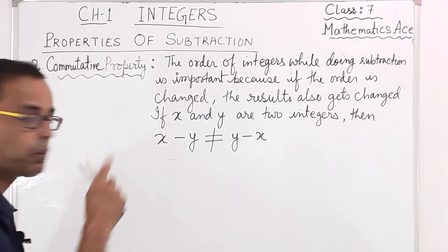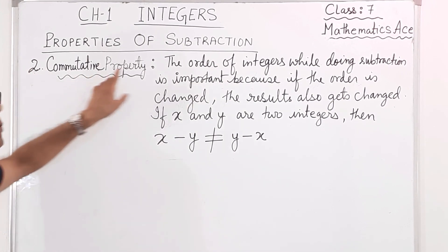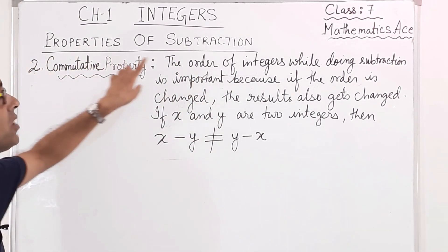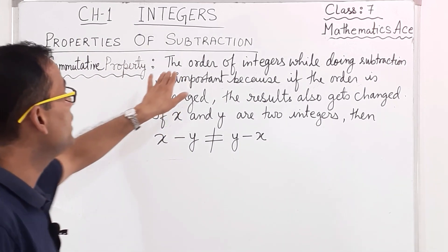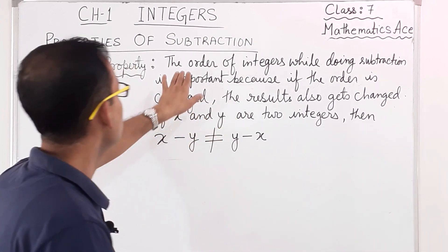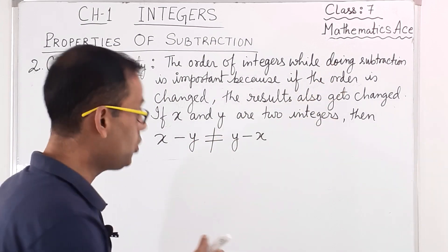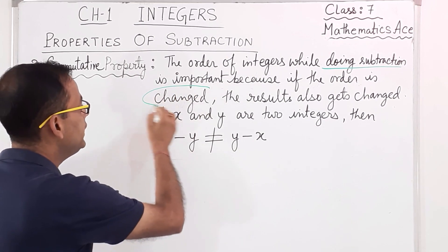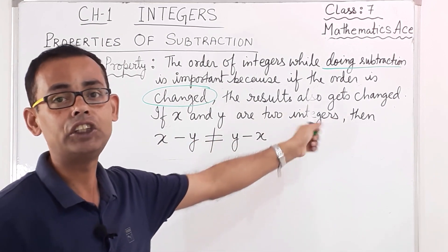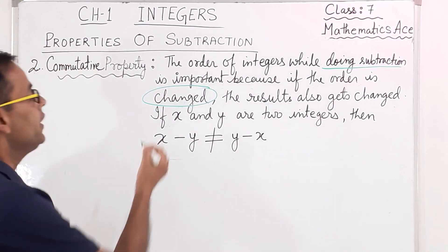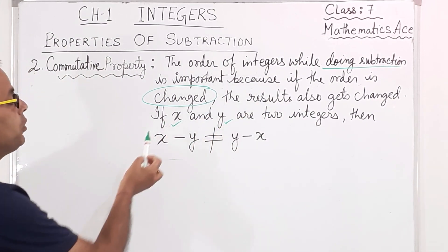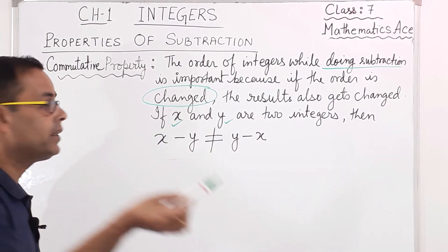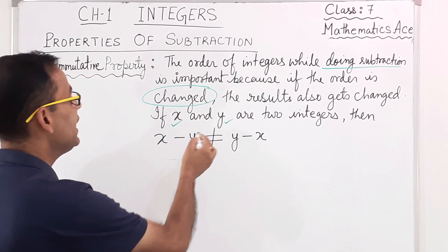The next property is the Commutative Property. Like in properties of addition, commutative property also appears in subtraction. The order of integers while doing subtraction is important, because if the order is changed, the result also gets changed. If X and Y are two integers, then X minus Y and Y minus X are not equal.